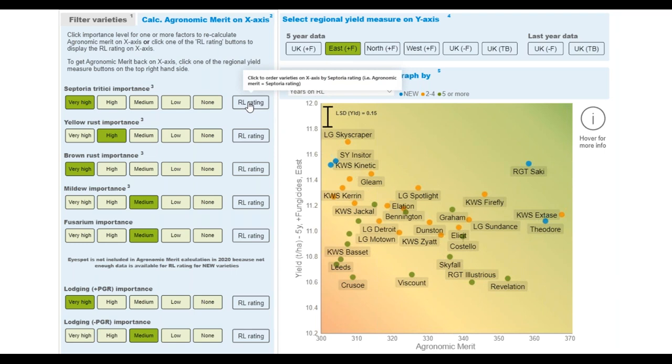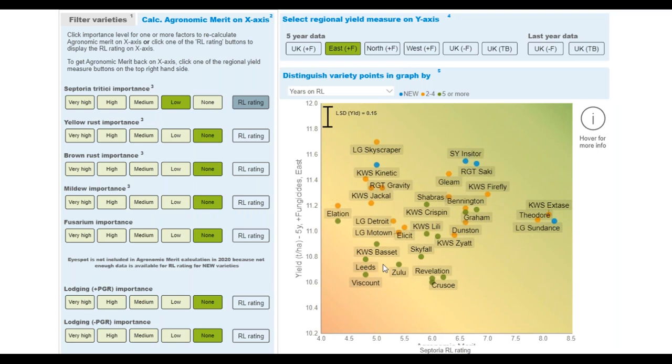Those varieties with a high brown rust rating will move to the right. They get moved to the right-hand side. Because they get weighted more, and therefore they move to the right-hand side. You can take that approach to the extreme. For example, agronomic merit currently is the total sum. But you can also look at the septoria rating. Currently we're looking at the septoria rating, and if you think about it, what's happening behind the scenes is that, because the weighting for low is one, and I've set all the other weightings to none - so none is a weighting of zero.